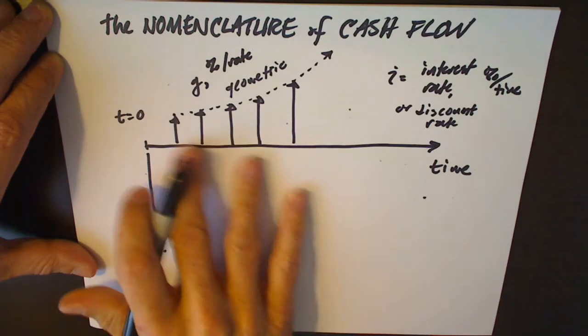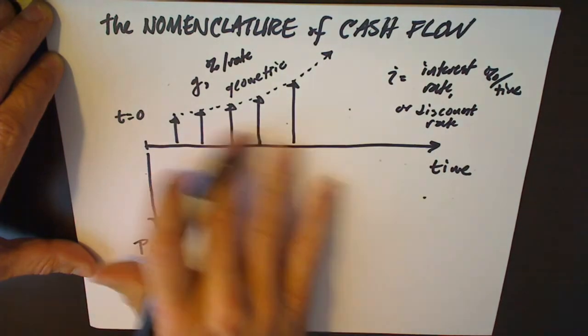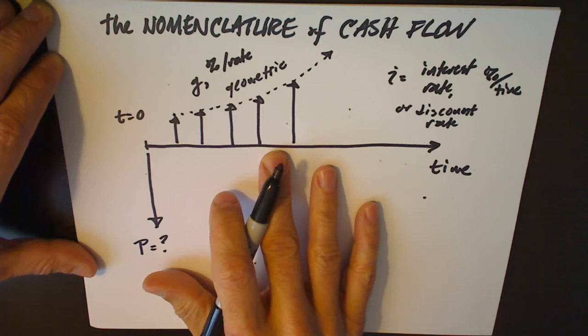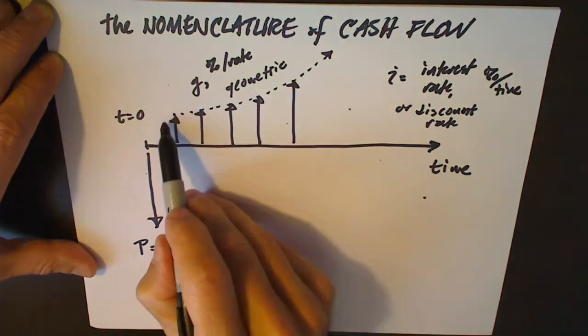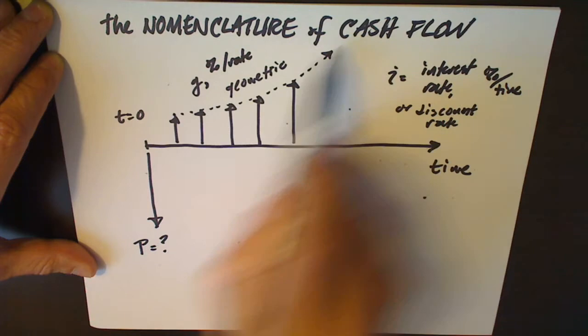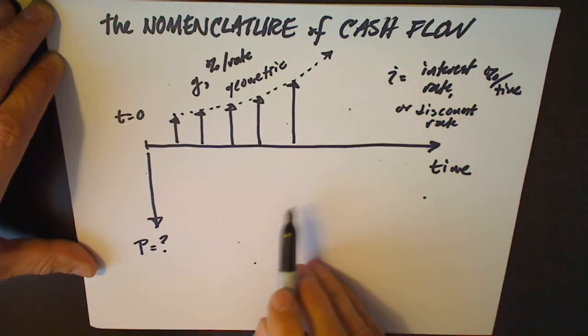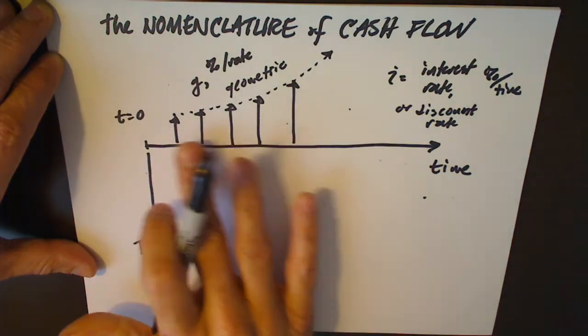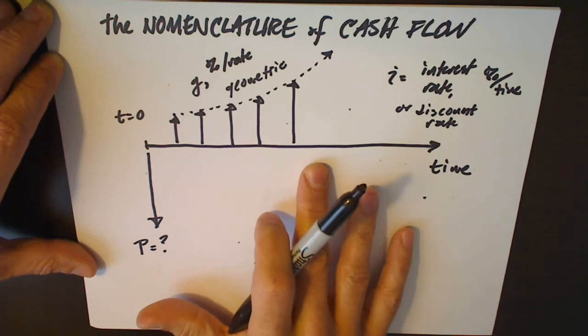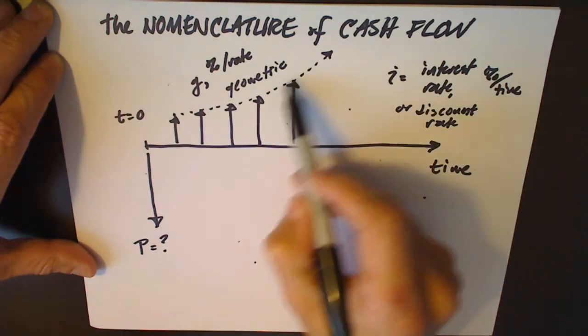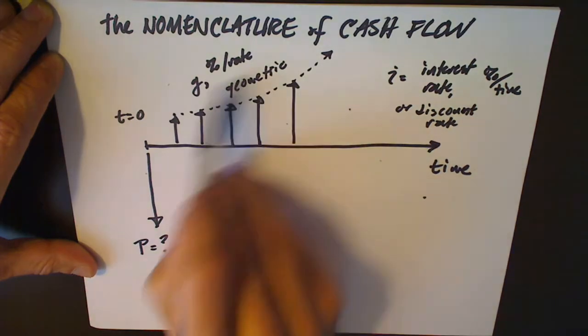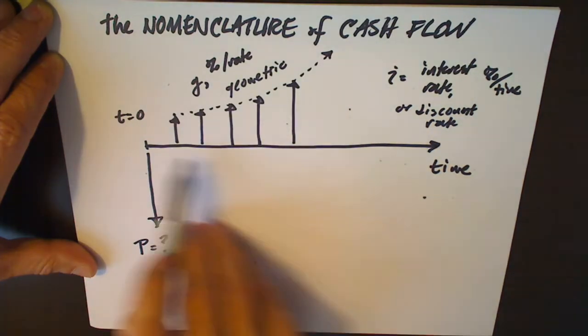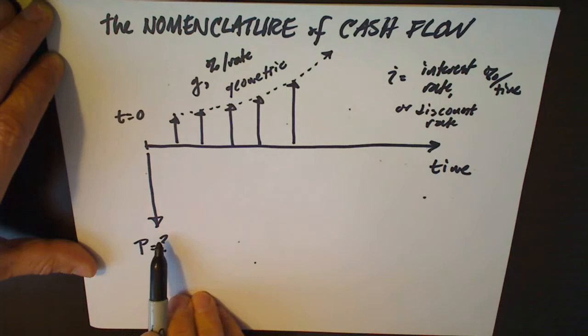In this example, we might be trying to value a new startup company, and the profits are growing at a rate of 10 or 20 percent per year. That means they grow geometrically, not arithmetically. And what we want to know is if we're expecting these kinds of profits at this kind of growth rate, how would we discount this series to a present value that represents what we'd be willing to pay for these expected profits.